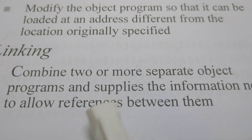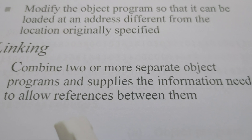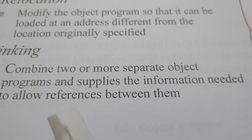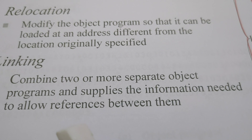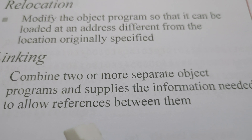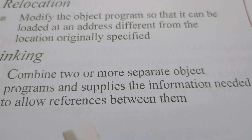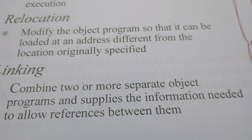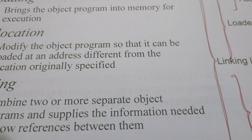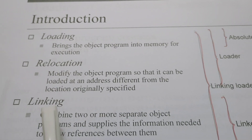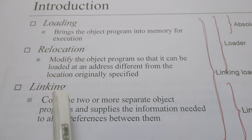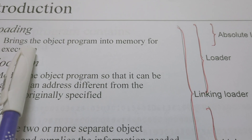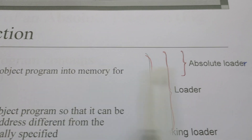Relocation means the object program along with the modification records is generated by the assembler. As per the instruction given in the object program, the object code is to be loaded at a different address from the location originally specified. Linking, the third task, combines two or more separate object programs and allows references between them to communicate information.